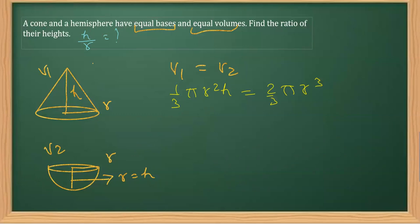Now in the next step, we can cancel this 3 and 3, and also reduce π and π. Now this is r³, right?